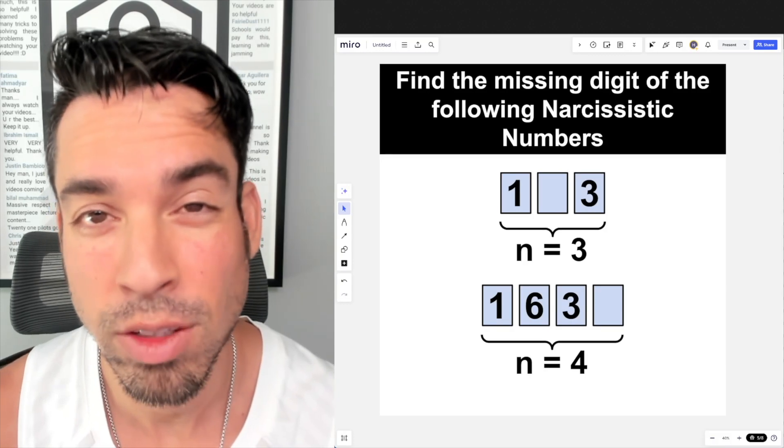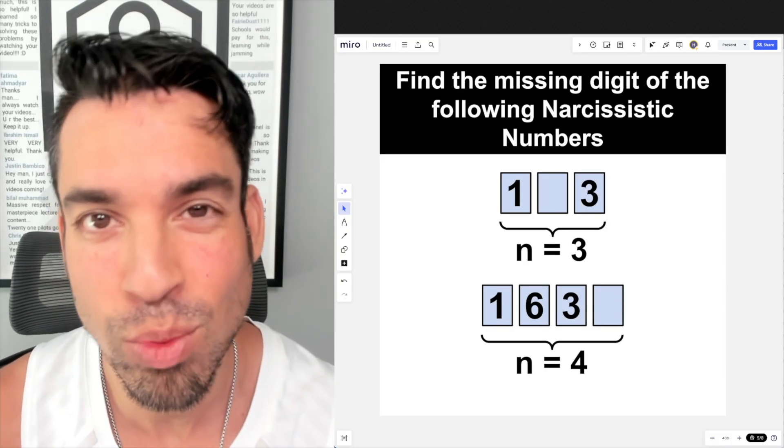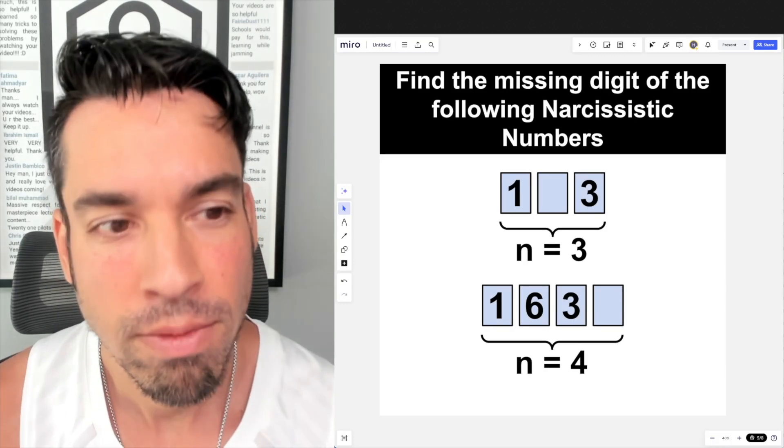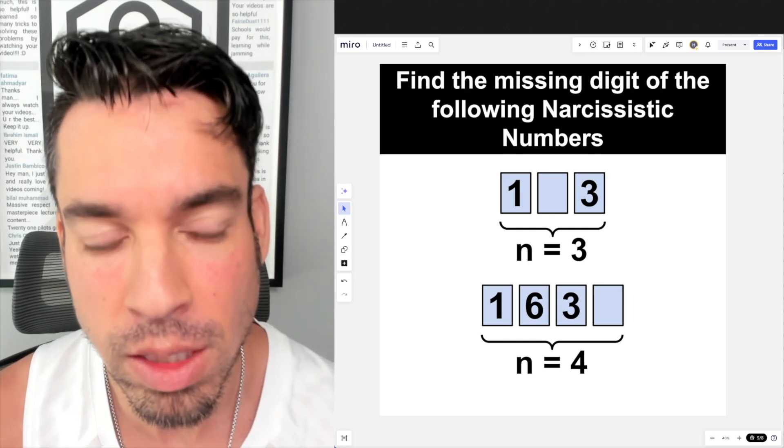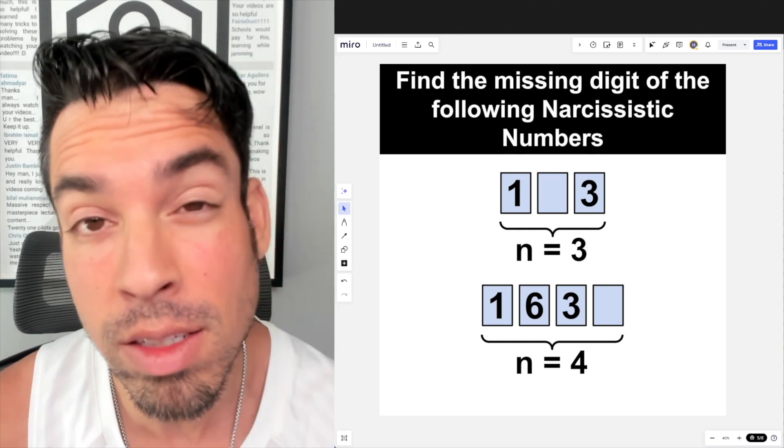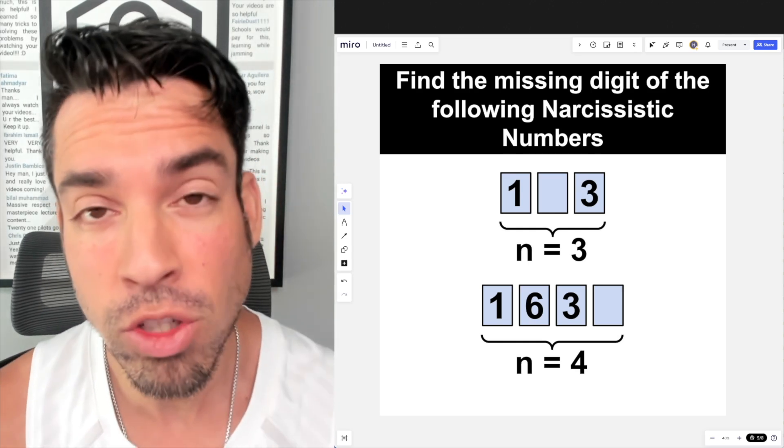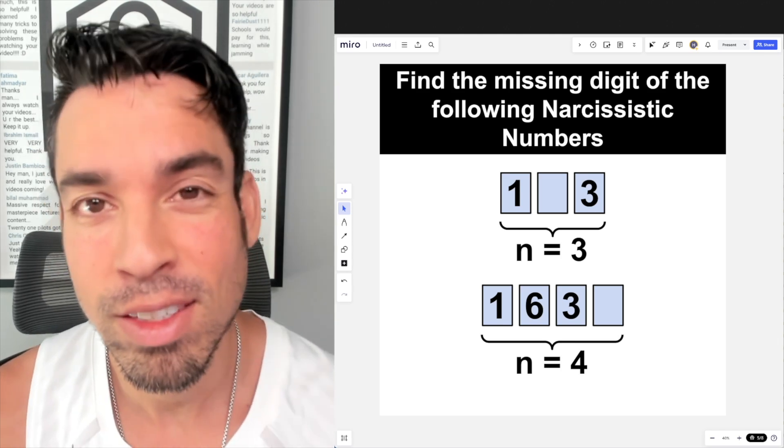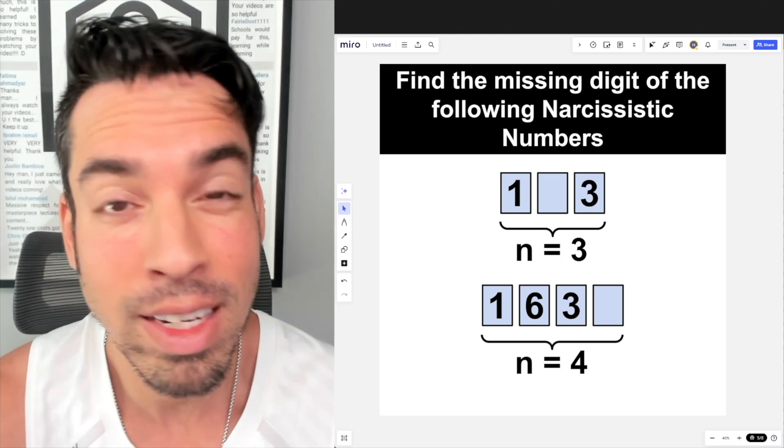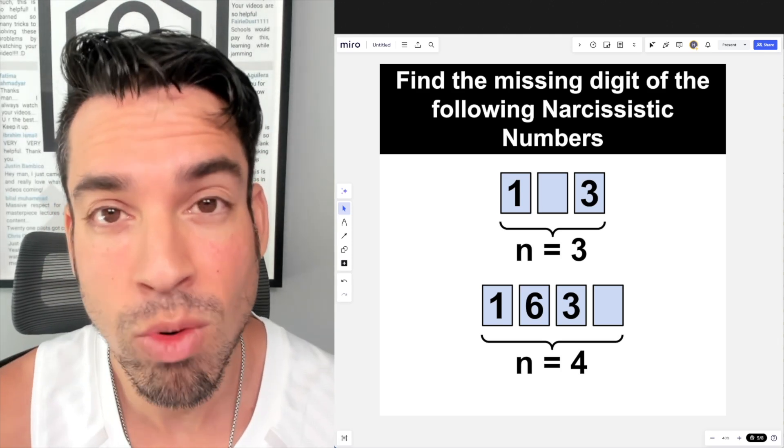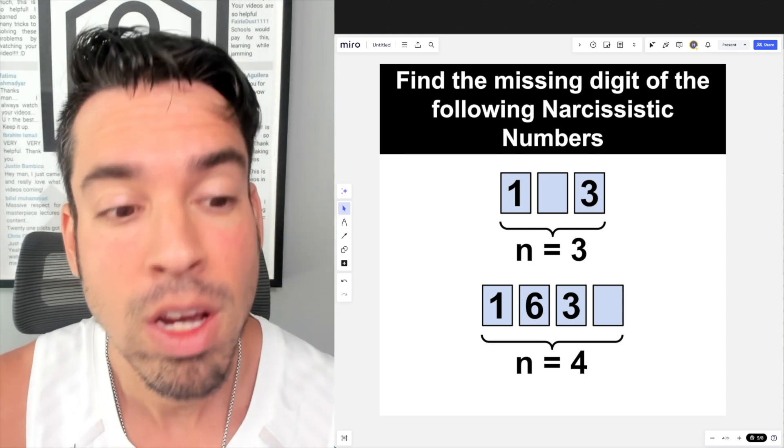What's up everybody and welcome back to another math puzzle. In this one the question is: find the missing digit of the following narcissistic numbers. So what is a narcissistic number? A narcissistic number is a number that when you take each individual digit and you raise it to the power of the total number of digits, you get that exact same number.